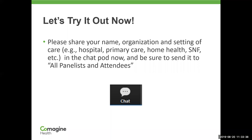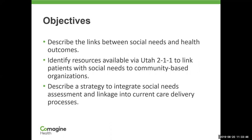While you're doing that, we're going to go over the learning objectives. It looks like we have some people from the university, Optum, Utah Department of Health. So let's talk about the objectives for today. First, we're going to describe the links between social needs and health outcomes. We're going to identify some resources available through the Utah 211 link for your patients with social needs to community-based organizations. And then we're going to describe a strategy to integrate social needs assessment and linkage into the current care delivery processes.